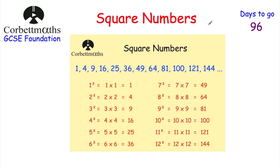We're going to start by looking at square numbers, then square roots, cube numbers and cube roots. So our square numbers are: 1, 4, 9, 16, 25, 36, 49, 64, 81, 100, 121, 144 and so on. I recommend that you learn these off by heart.